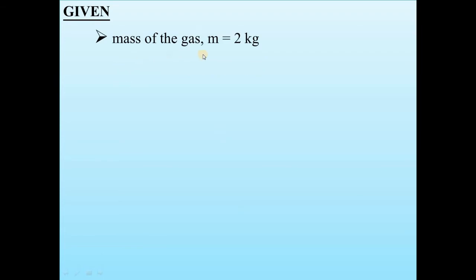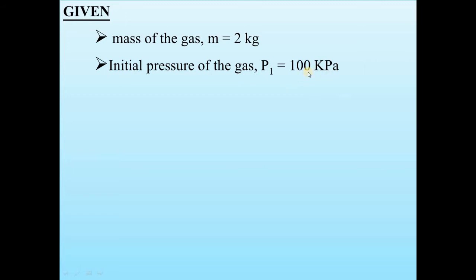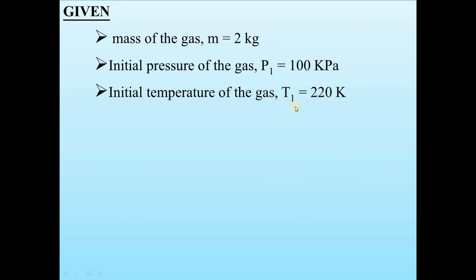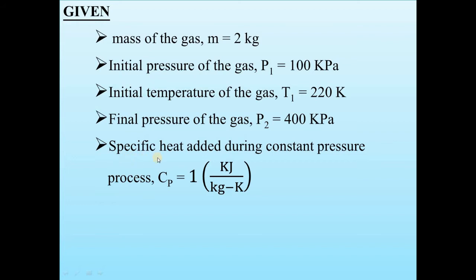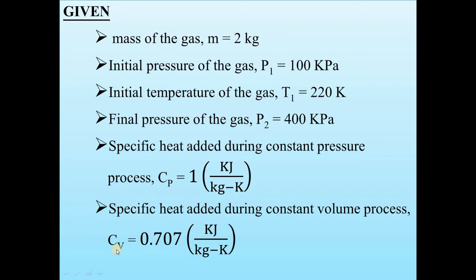Now I will restate the given conditions. Mass m = 2 kg, initial pressure P1 = 100 kPa, initial temperature T1 = 220 K, final pressure P2 = 400 kPa, Cp = 1 kJ/kg·K, and Cv = 0.707 kJ/kg·K. Using these six parameters, we are going to find the six unknown parameters.